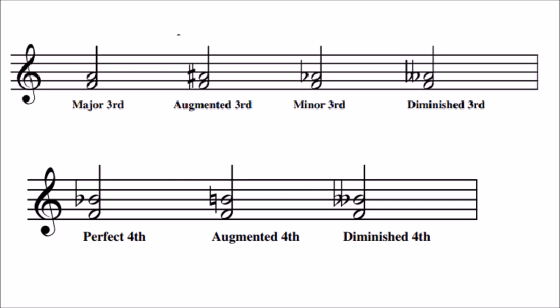Now if we consider a perfect interval such as a fourth: F to B flat is a perfect fourth because B flat is the fourth note of F major. Remember there is no such thing as a major or minor fourth. Therefore F to B natural is an augmented fourth because it has been increased by a semitone, and F to B double flat is a diminished fourth — it has been decreased by a semitone.